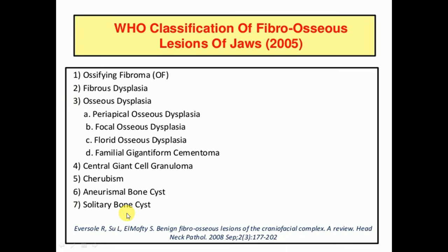There are seven types of lesions given here. First we have ossifying fibroma, then fibrous dysplasia, then osseous dysplasia — which is further classified into periapical osseous dysplasia, focal osseous dysplasia, florid osseous dysplasia, and familial gigantiform cementoma — and then central giant cell granuloma, cherubism, aneurysmal bone cyst, and solitary bone cyst. We will discuss these conditions later.